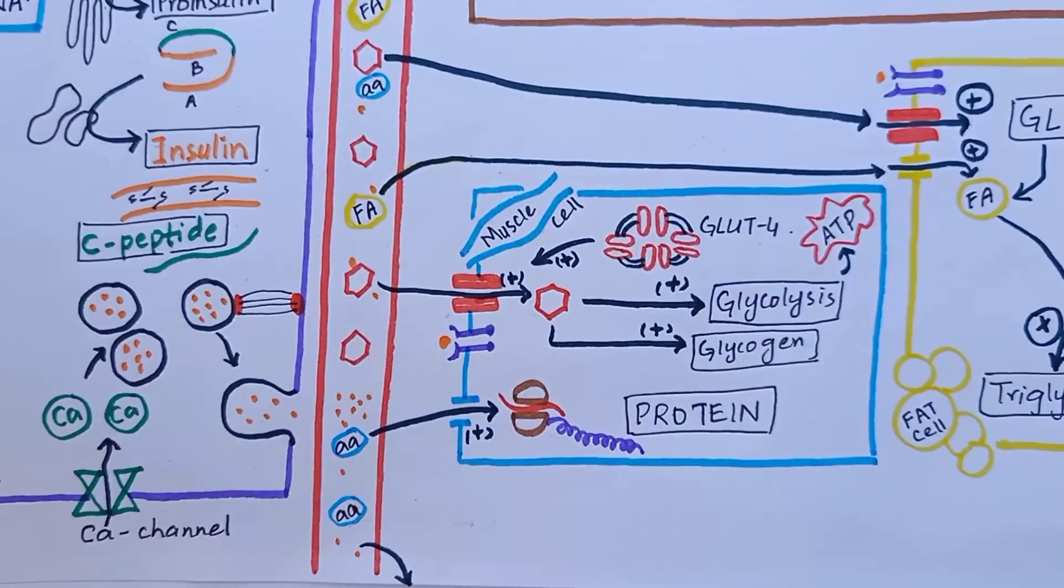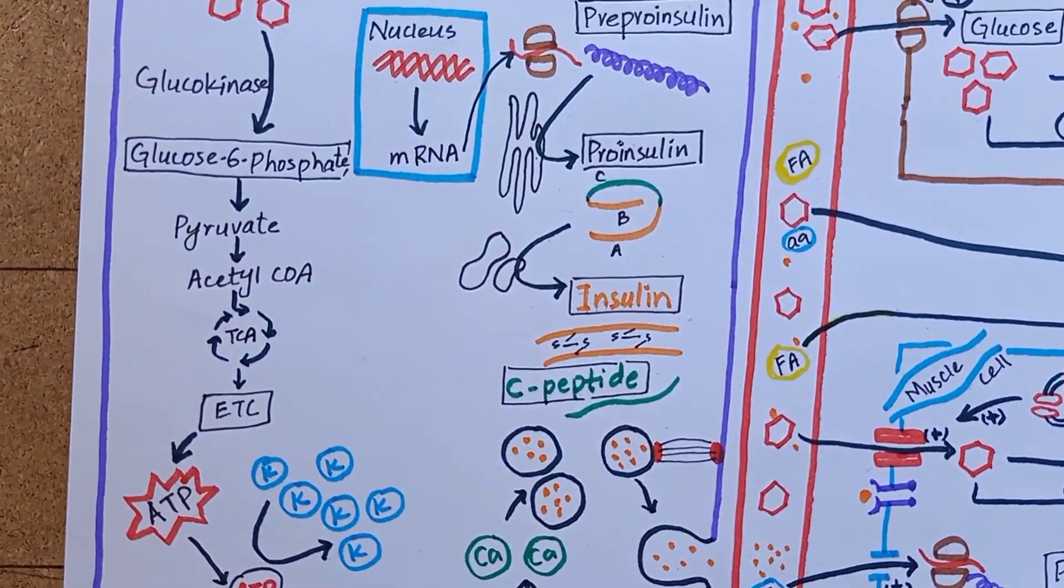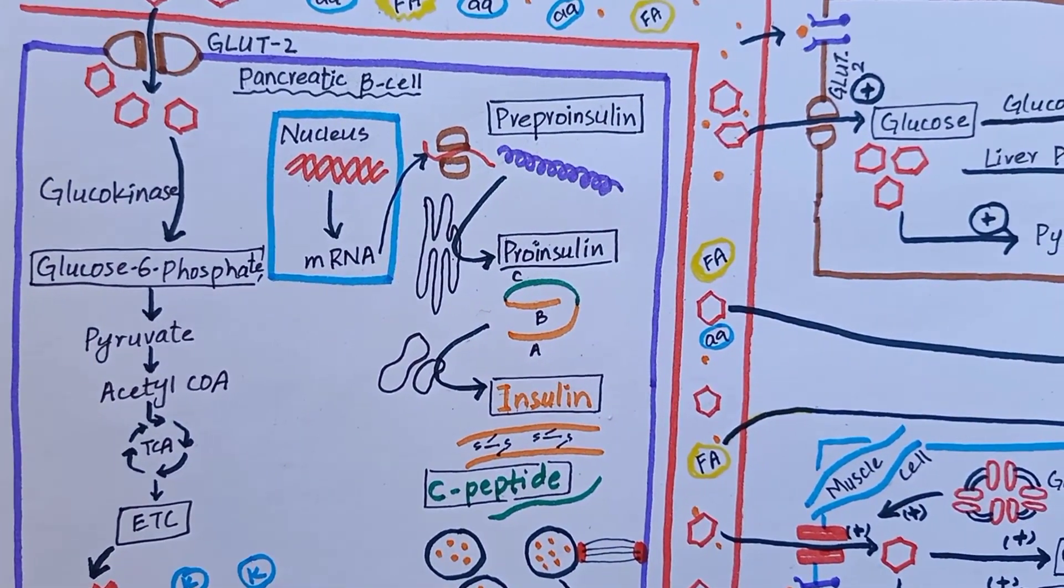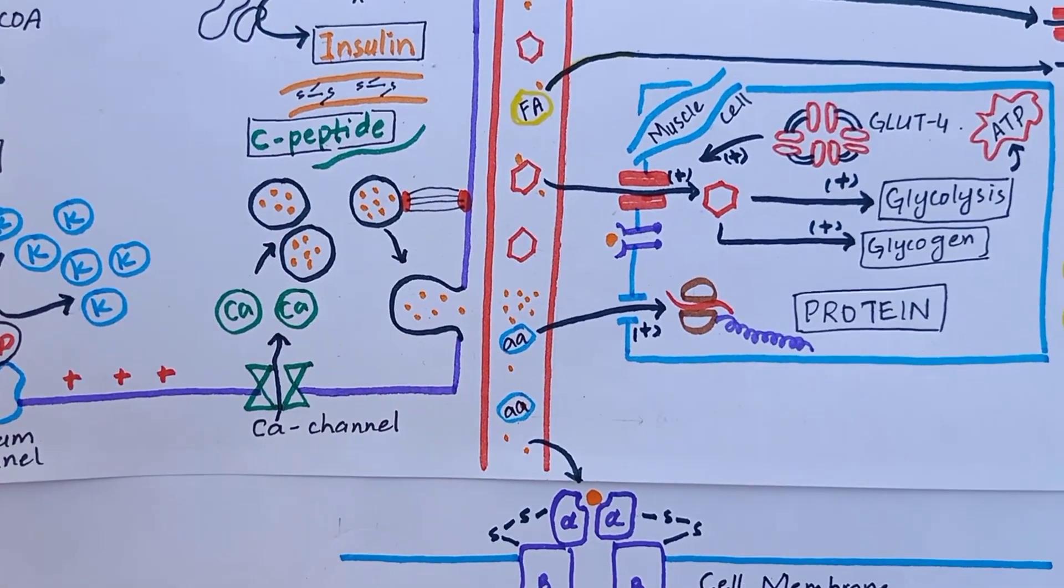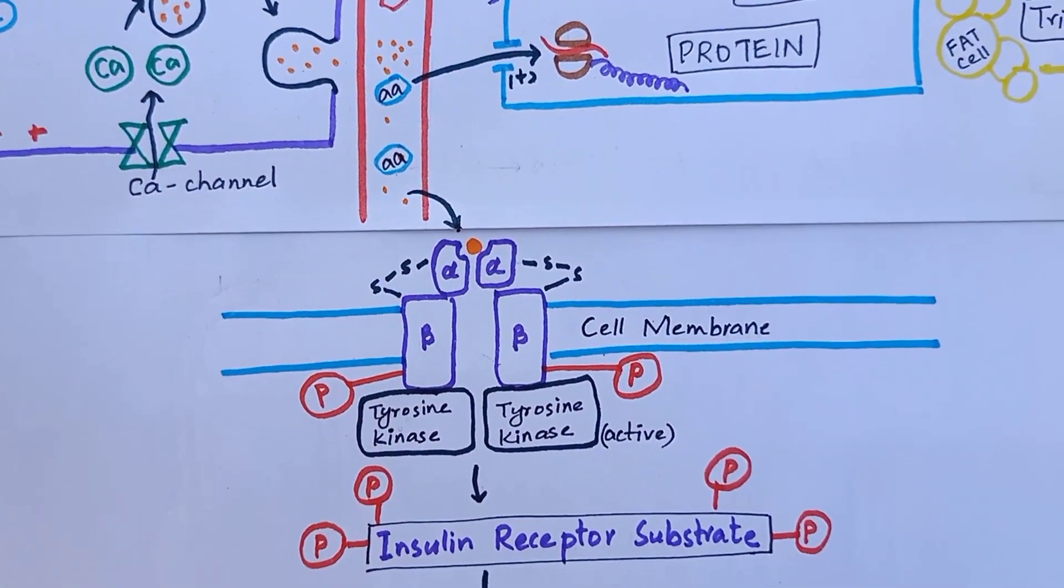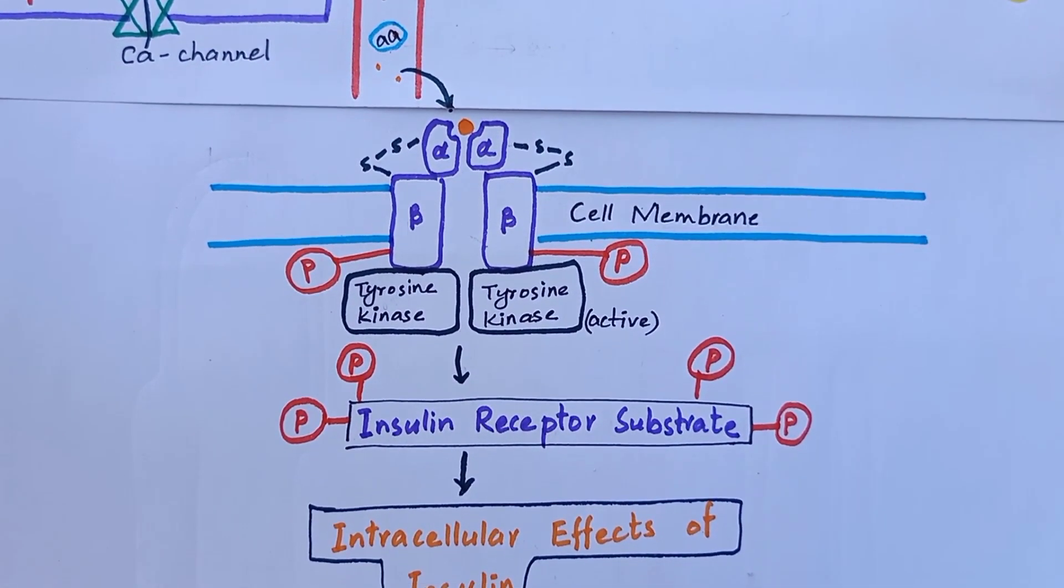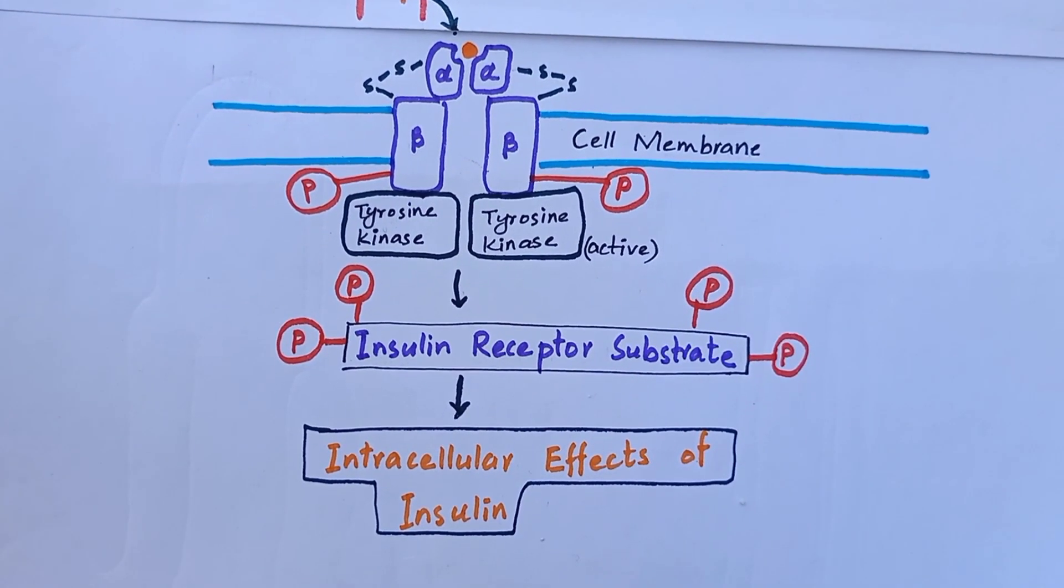So in summary, insulin causes increased glucose uptake by the cells, increased breakdown of glucose to form energy, and then storage of glucose in the form of glycogen, proteins, and triglycerides as an energy reserve.